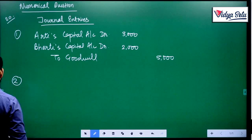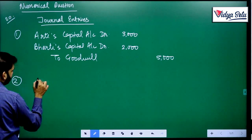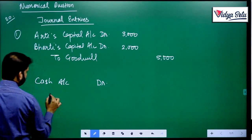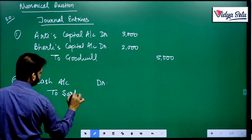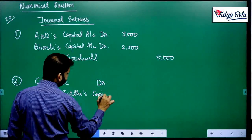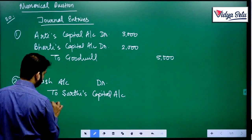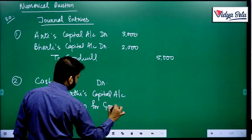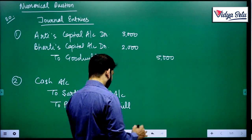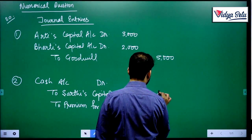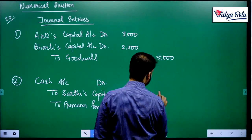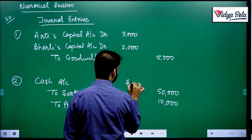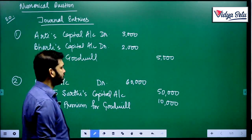Next journal entry will be when the new partner comes in. Sarthi, he is bringing in cash account debit to Sarthi's capital account and to premium for goodwill 10,000. 50,000 was the capital and 10,000 was the goodwill amount for one-fourth share. So total cash that is brought in is rupees 60,000.